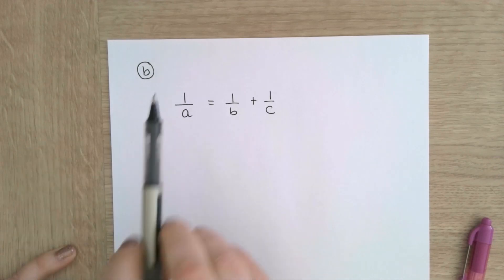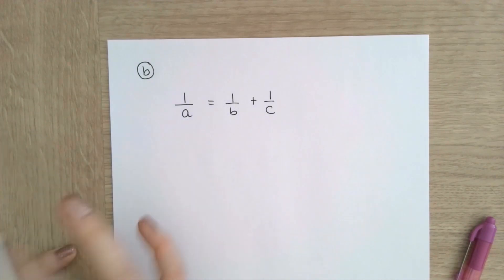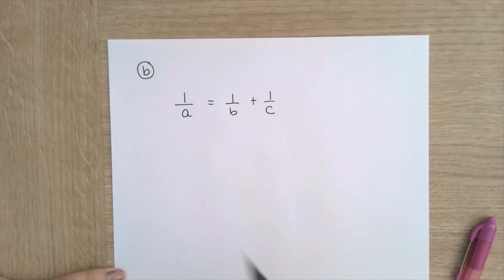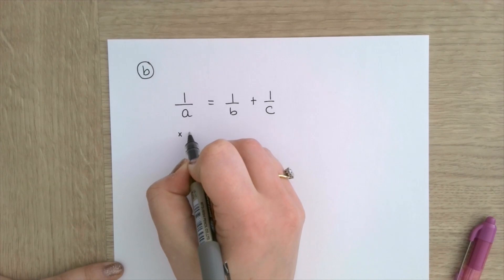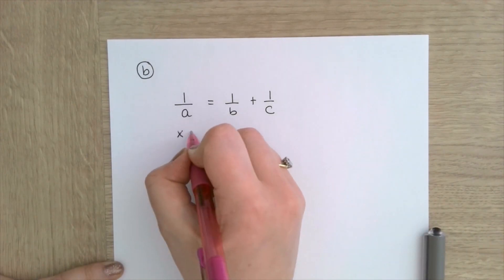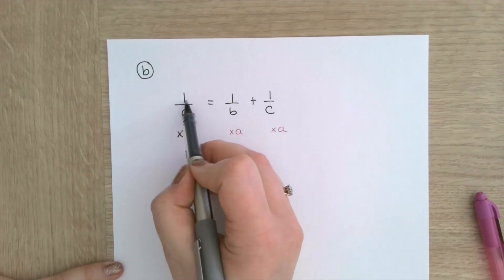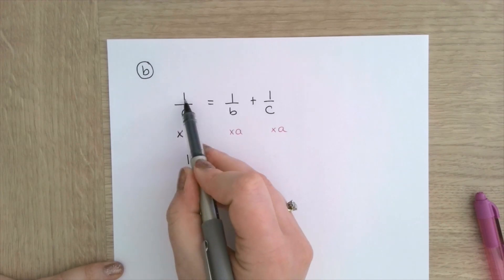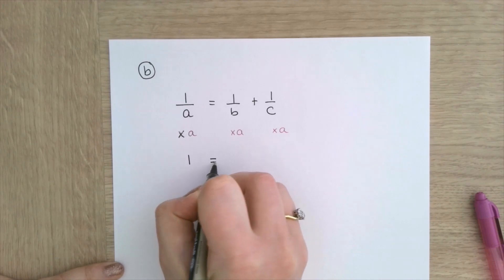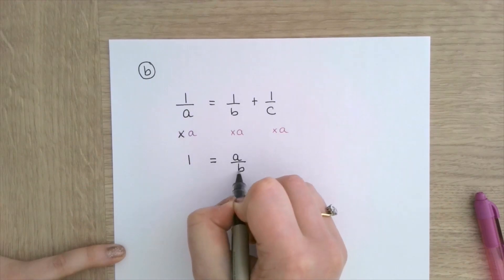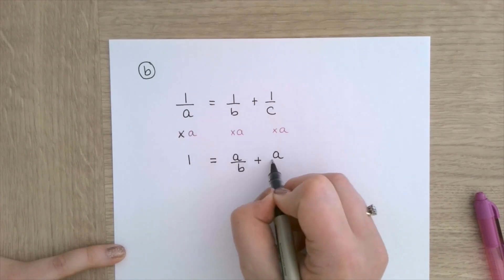First of all, I'm going to sort out the denominators — try to make it look less ugly. So I'm going to multiply everything by a. If I multiply everything by a, I'm left with 1 here, because 1 over a multiplied by a gives just the numerator of 1. It's going to equal a over b plus a over c.